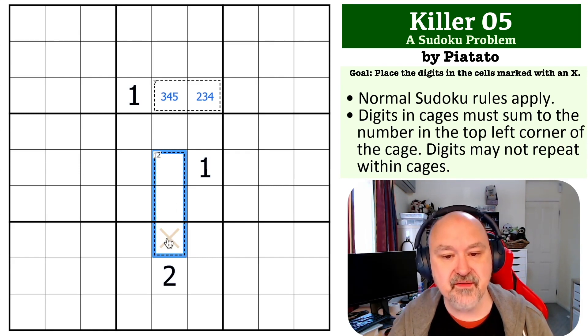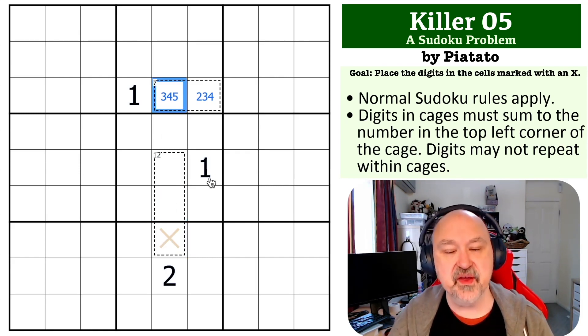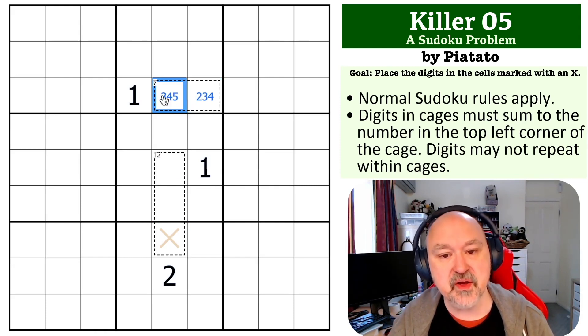Because if we use 3, 4, 5 in this 12 cage, there is nothing we can place in that cell right there to make this 7 cage work, because this 7 cage requires a 3, 4, 5 there because of this 1 and this 2. So this 7 cage is eliminating 3, 4, 5 as an option from this 12 cage.